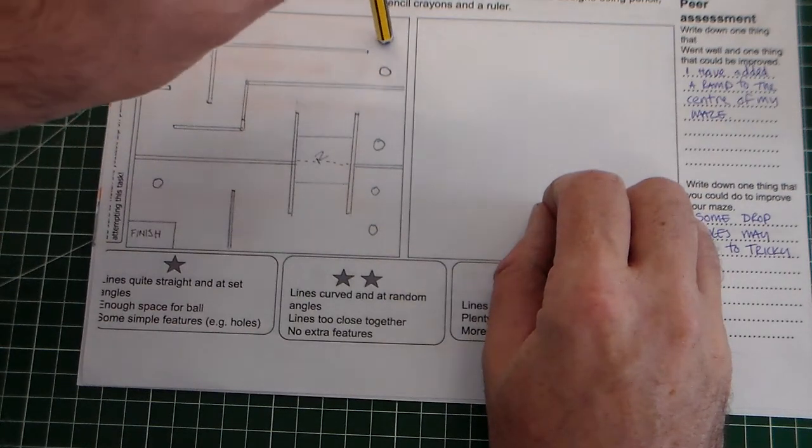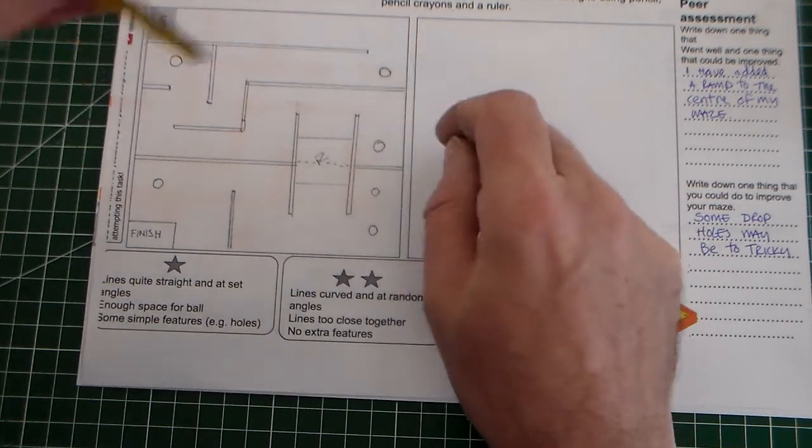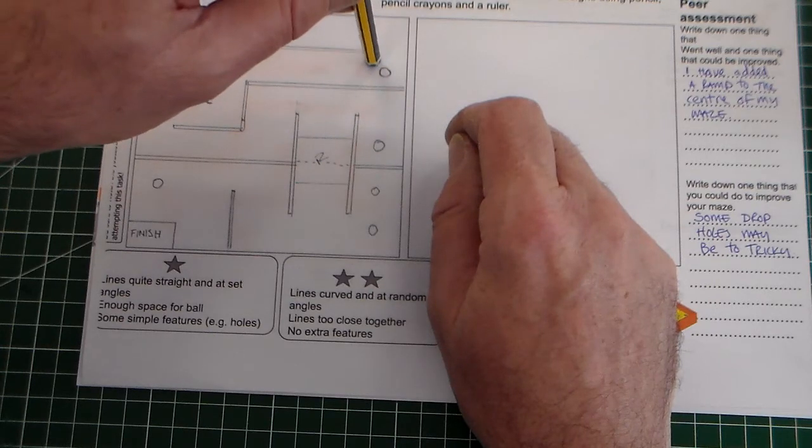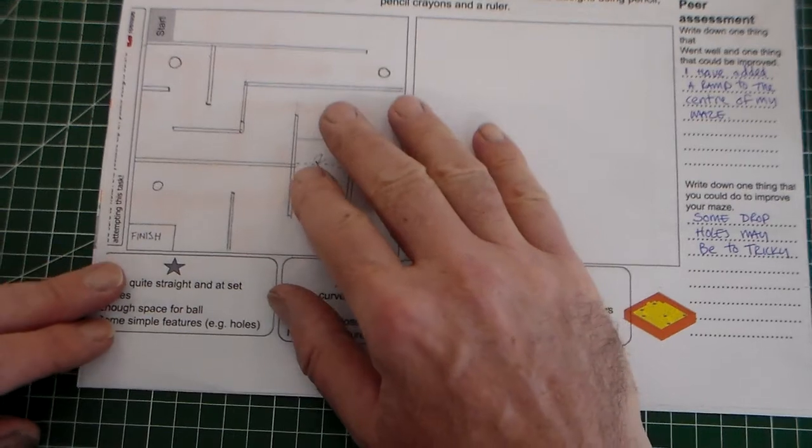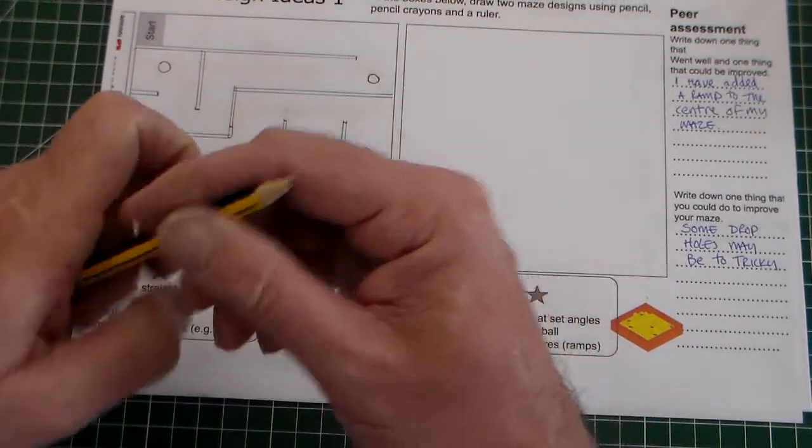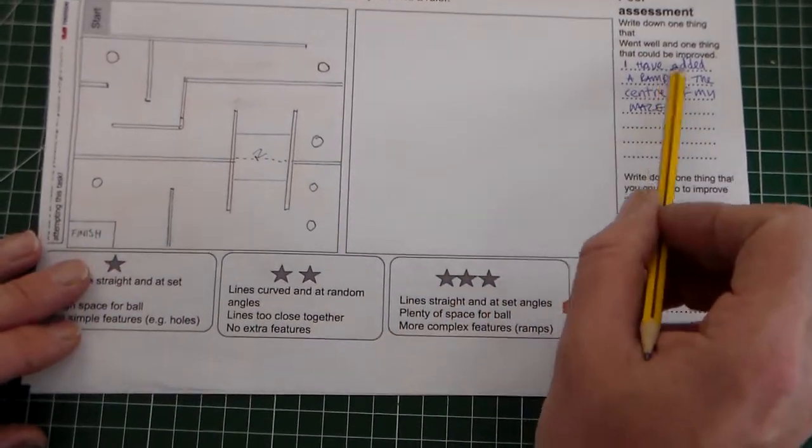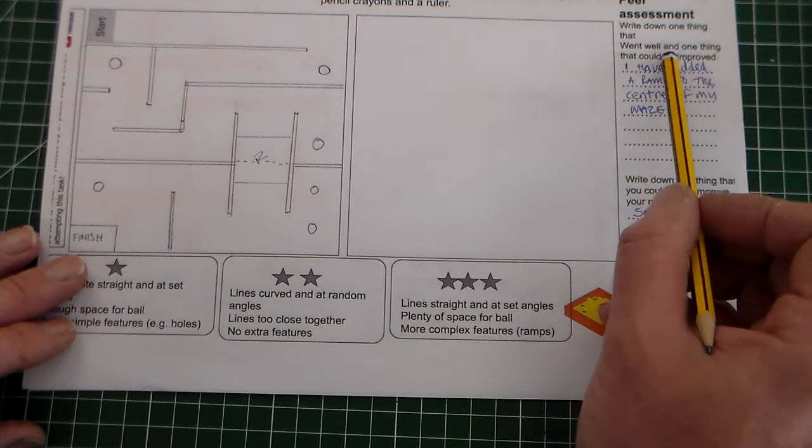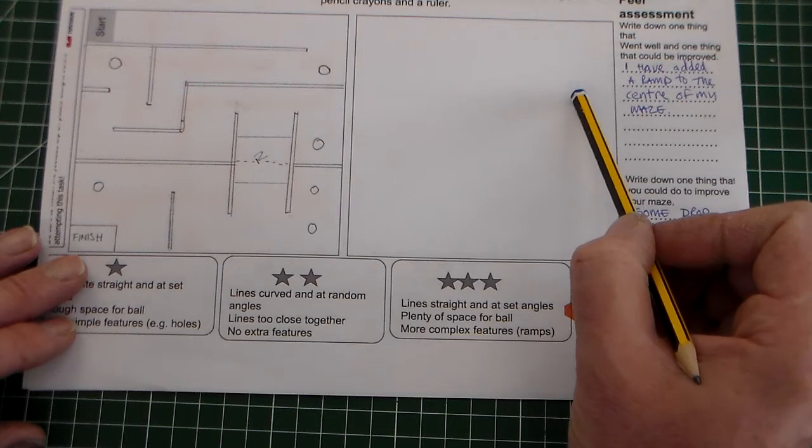And you see there, I can see it's going to be a little bit tricky here because I've put a drop hole here, but this is part of the route the ball needs to take. And you can see it does fit through, but it might be a little bit tricky. So what I've done now is I've created my maze, I've tested it, and I'm going to evaluate it. Here it says peer assessment, so you can ask a friend or you can complete it yourself.